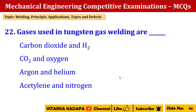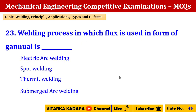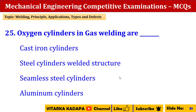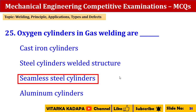Gases used in TIG welding are argon and helium. The welding process in which flux is used in the form of granules is submerged arc welding. In ultrasonic welding, the frequency range is 4000 to 20000 CPS. Oxygen cylinders in gas welding are seamless steel cylinders.